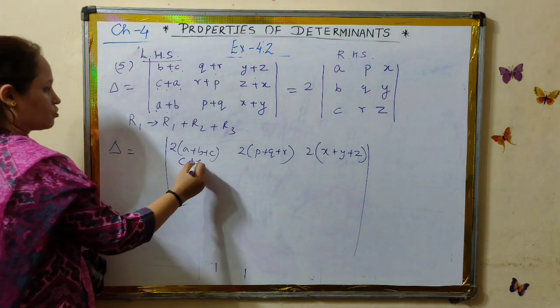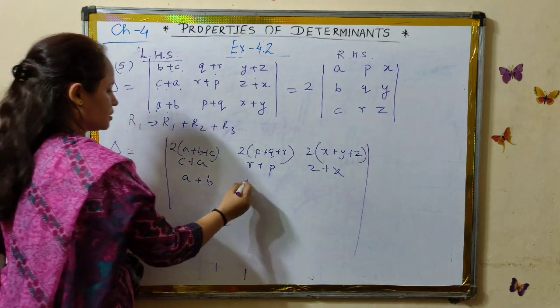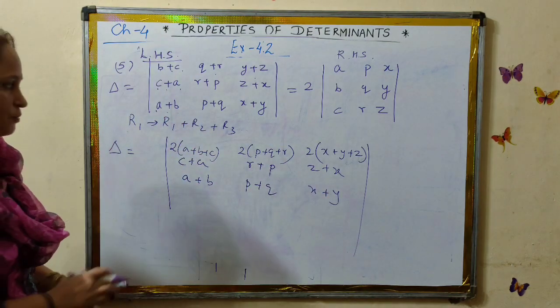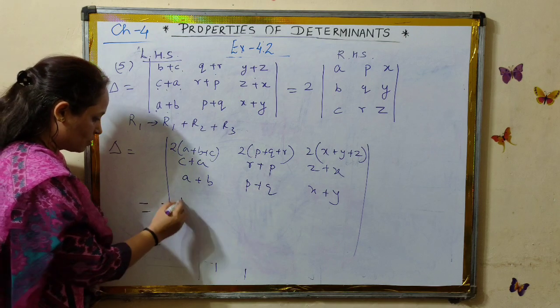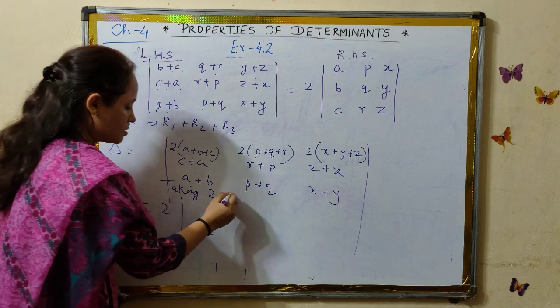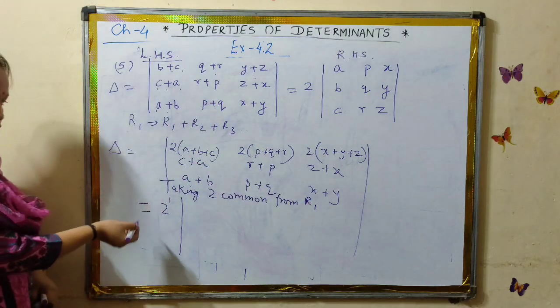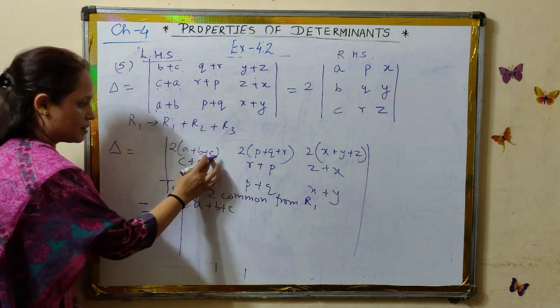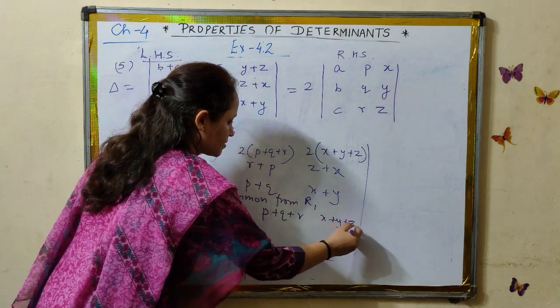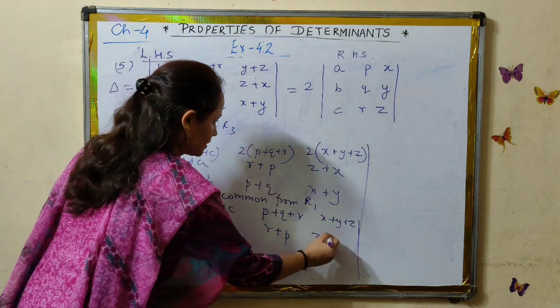We write the other two rows as it is. No changes. And what happens to the determinant in the next step now? We take 2 common from the determinant from row 1. The determinant will become like this. Taking 2 common from row 1, you get 2 outside the determinant. The first row is A plus B plus C, P plus Q plus R, X plus Y plus Z. The remaining two rows, you can write it down as it is. Just repeat it.